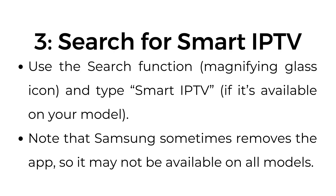Step number three: search for Smart IPTV. Use the search function, represented by a magnifying glass icon, and type 'Smart IPTV' — if it's available on your model. Note that Samsung sometimes removes the app, so it may not be available on all models.